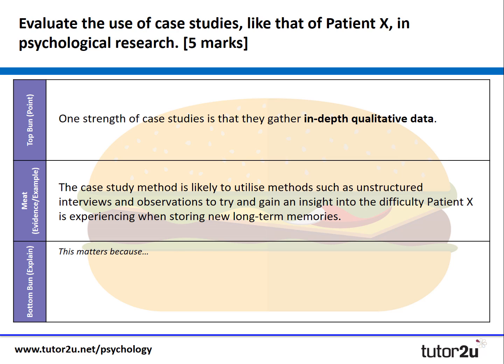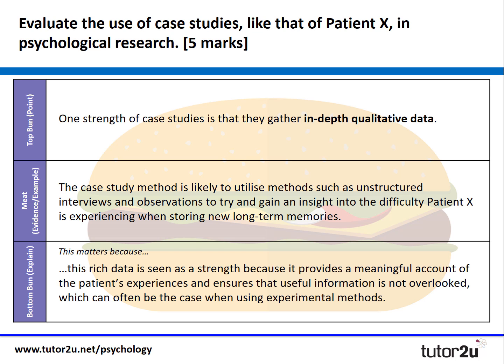What we've done there is contextualised this particular evaluation paragraph in the context of this research method example. We then need to say why it matters. It matters because this rich data is seen as a strength because it provides a meaningful account of the patient's experiences and ensures that useful information is not overlooked, which can often be the case when using other experimental methods. It's that bottom bun — the explanation — that many students miss off on a point like this, but it's crucial to explain why the case study method is useful.